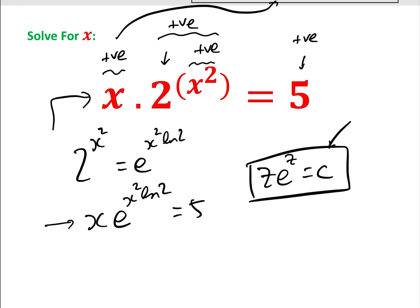Now the problem is we have x here and x² here, so what we need to do is square both sides, so we get x²·e^(x²·ln2) squared, which is basically e^(2x²·ln2), equals 25.